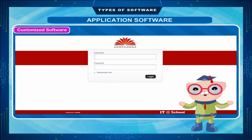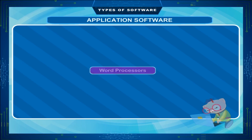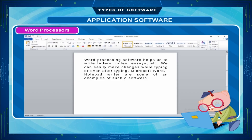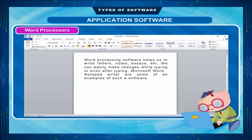Word Processors. Word processing software helps us to write letters, notes, essays, etc. We can easily make changes while typing or even after typing. Microsoft Word, Notepad, and Writer are some common examples of such software.